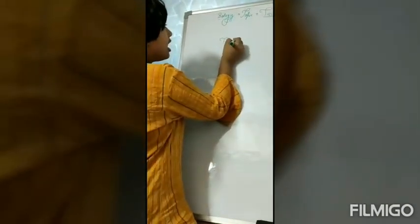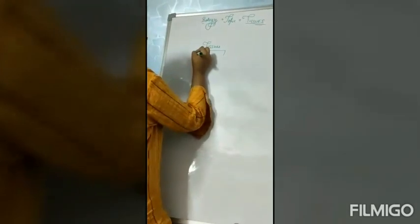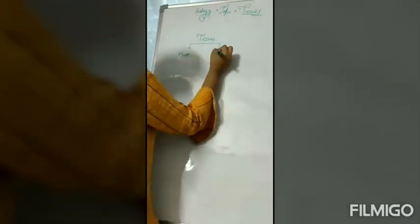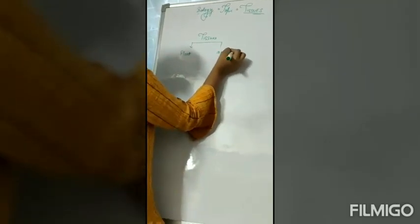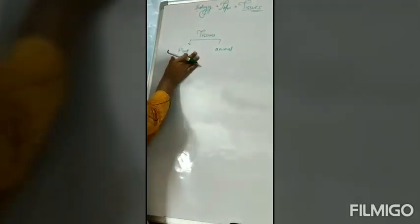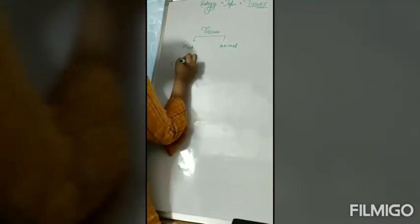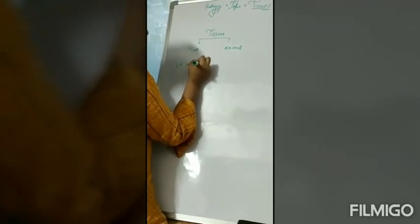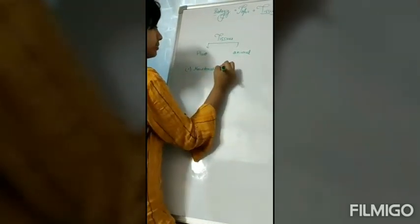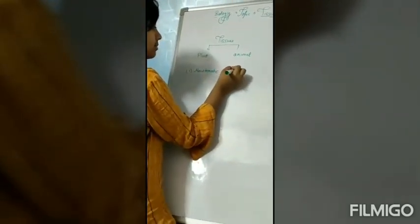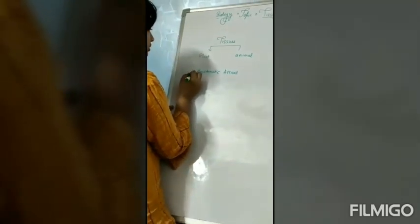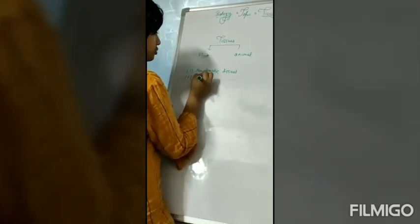Tissues are of two types: plant tissues and animal tissues. First, we will study about plant tissues. In plant tissues, we have meristematic tissues and permanent tissues.